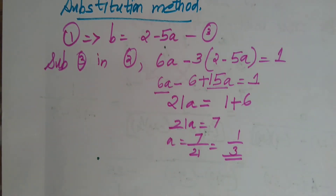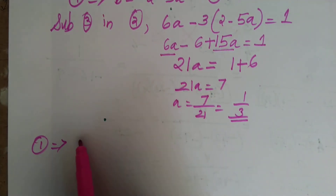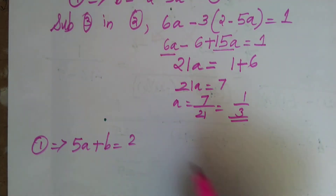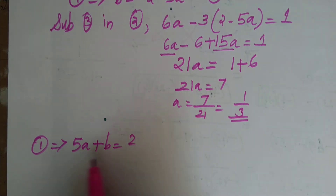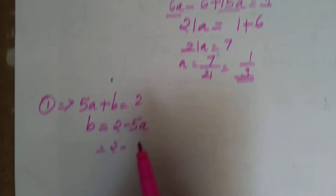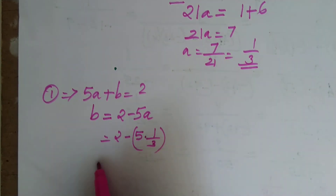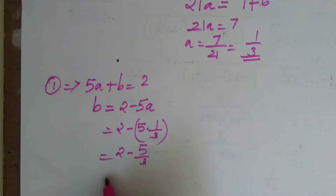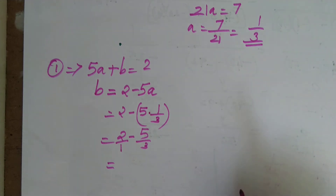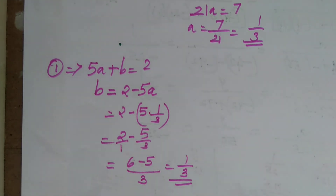Now substitute a = 1/3 into equation 1, which is 5a + b = 2. So b = 2 - 5a = 2 - 5×(1/3) = 2 - 5/3. Taking LCM as 3: (6 - 5)/3 = 1/3. So b = 1/3. We have a = 1/3 and b = 1/3.